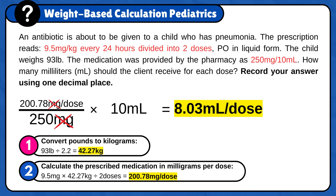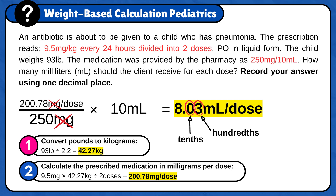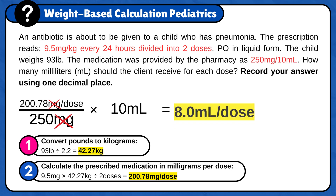Now, round to one decimal place. Since the hundredth digit is between 0 and 4, you would round down by keeping the tenth place the same. The final answer is 8.0 milliliters per dose.